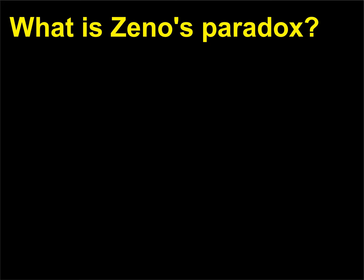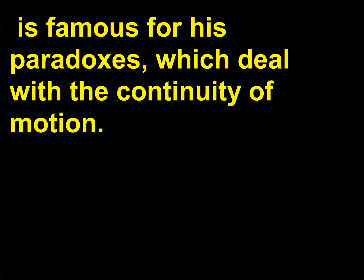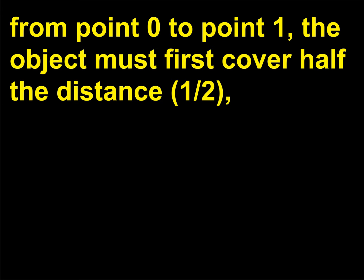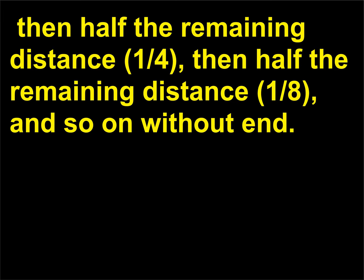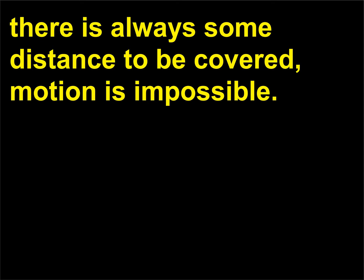What is Zeno's paradox? Zeno of Elea (c. 490–c. 425 BCE), a Greek philosopher and mathematician, is famous for his paradoxes, which deal with the continuity of motion. One form of the paradox states: if an object moves with constant speed along a straight line from point 0 to point 1, the object must first cover half the distance (one half), then half the remaining distance (one fourth), then half the remaining distance (one eighth), and so on without end. The conclusion is that the object never reaches point 1 because there is always some distance to be covered — therefore motion is impossible.